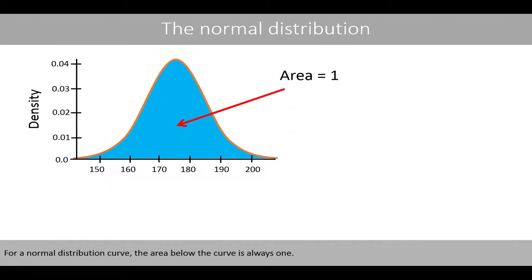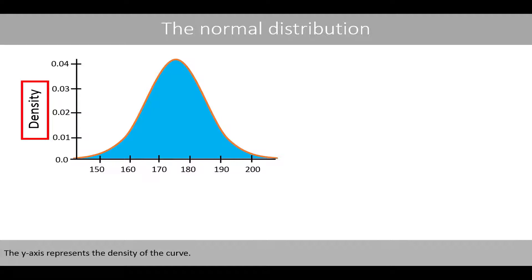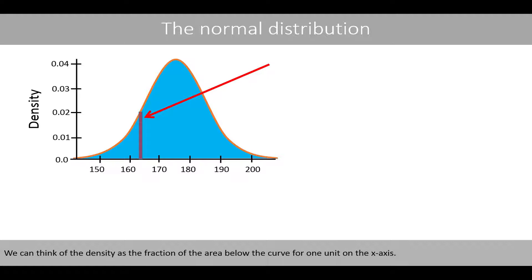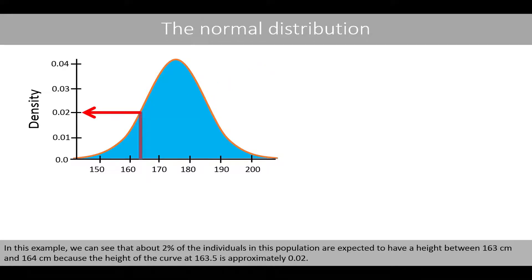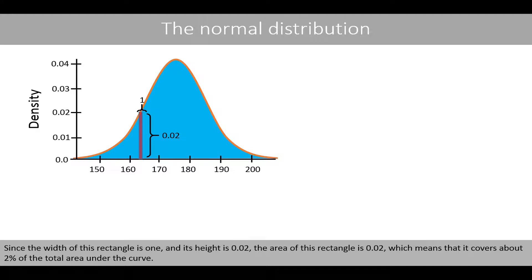Note that the height of the curve has been adjusted to fit the histogram, where the area below the curve is greater than 1 in this example. For a normal distribution curve, the area below the curve is always 1. The y-axis represents the density of the curve. We can think of density as the fraction of the area below the curve for one unit on the x-axis. In this example, about 2% of individuals are expected to have a height between 163 and 164 centimeters, because the height of the curve at 163.5 is approximately 0.02. Since the width of this rectangle is 1 and its height is 0.02, the area is 0.02, covering about 2% of the total area under the curve.